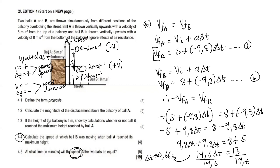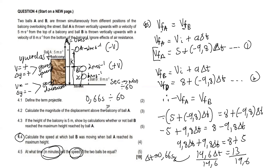Remember, they want the time in minutes. To convert seconds to minutes, divide by 60. So 0.66 seconds divided by 60 gives our time as 0.011 minutes.